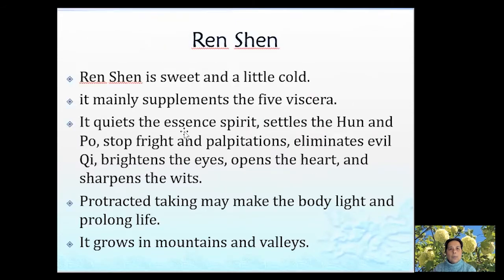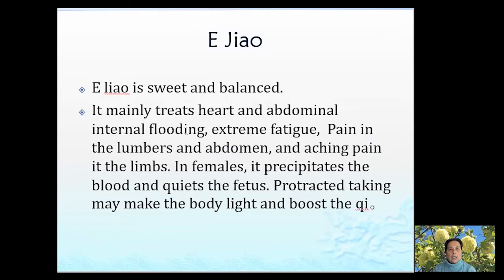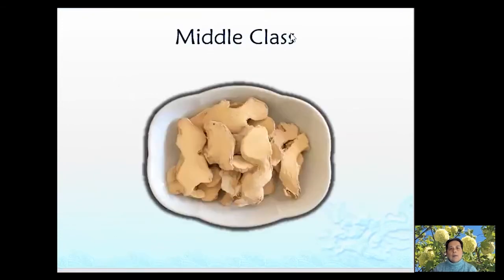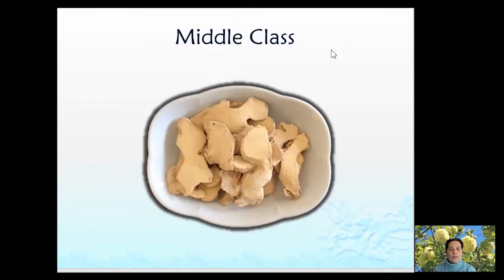Now we go to middle category herbs — the superior category we finished already. The middle category still has 120 herbs. Some herbs may have toxins and some may not. They are mainly used for treatment, but if they have toxins, they may not be used for long periods. In this category, they are used as chen herbs.